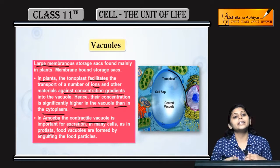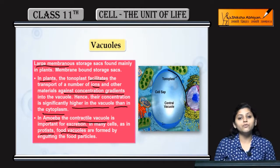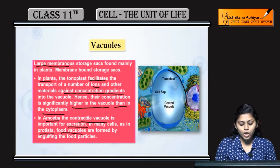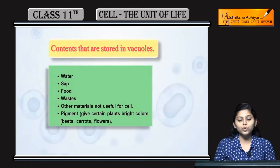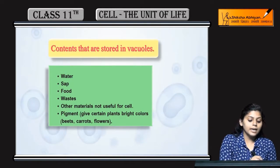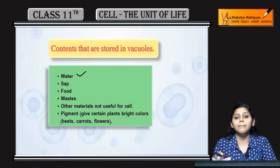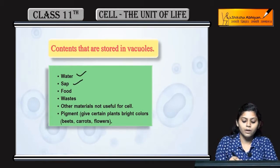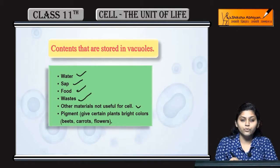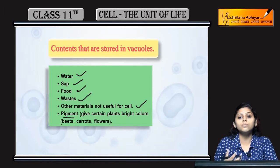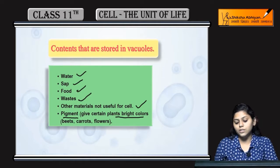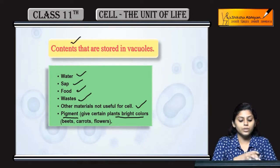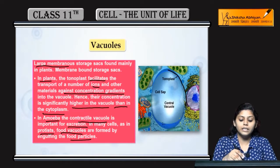Many other cells like protists mein food vacuoles present hoti hain, jo bantay hain by engulfing the food particles. Vacuoles store kar saktay hain: water sap, food, waste — kuch aisa material jo cells ke liye koi use nahi — aur kuch pigments bhi ho saktay hain jo plants ko bright color provide karthay hain. Ye tha vacuoles ke storage contents.